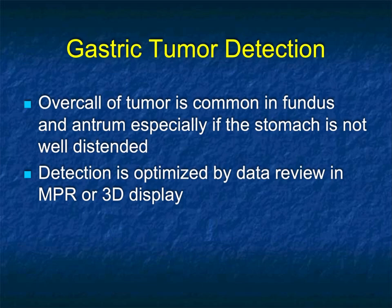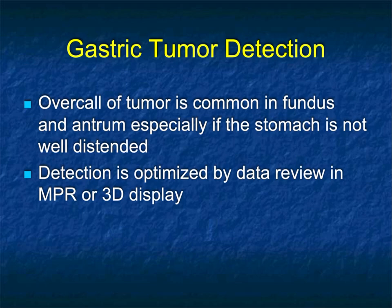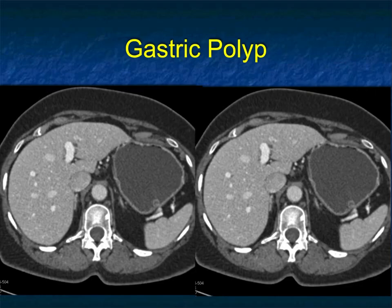In terms of the stomach, we cannot say often enough: maximum gastric distension is necessary if you want to pick up tumors. If the stomach is not distended, you're just not going to see a mass. Areas that are particularly difficult even with distension are perhaps the fundus and antrum, which are the areas least likely to be distended. Multi-plane or even 3D imaging is valuable.